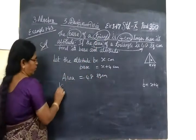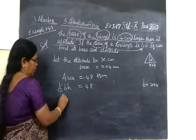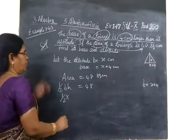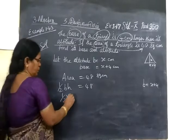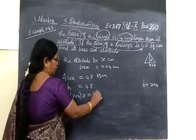Area of the triangle formula: half into base into height equals 48. So half into base is what? Base equals x plus 4. Height equals x equals 48.